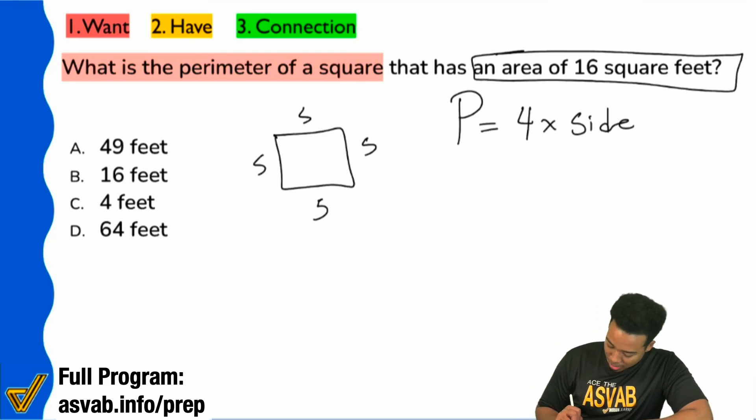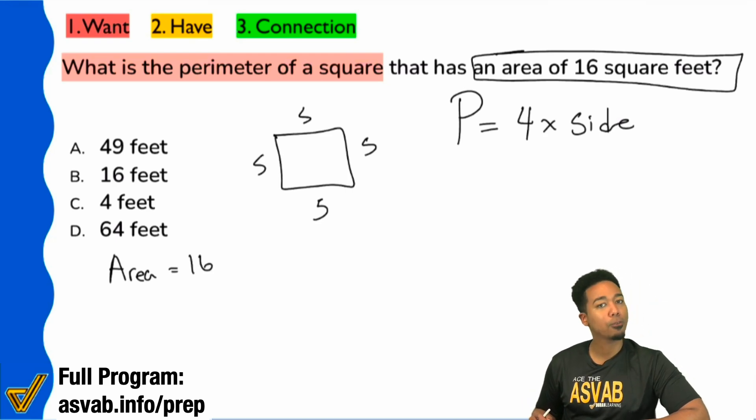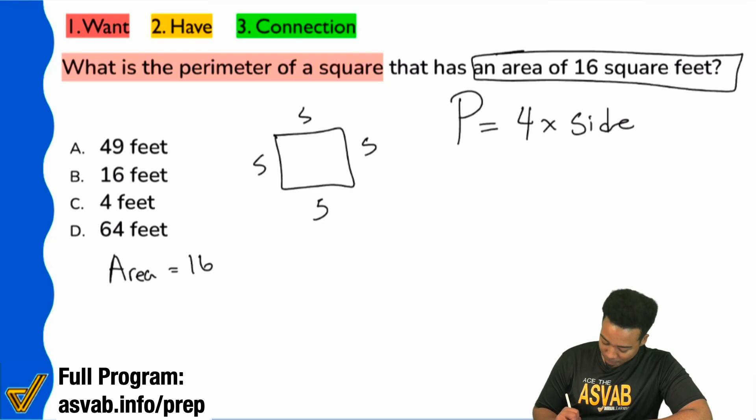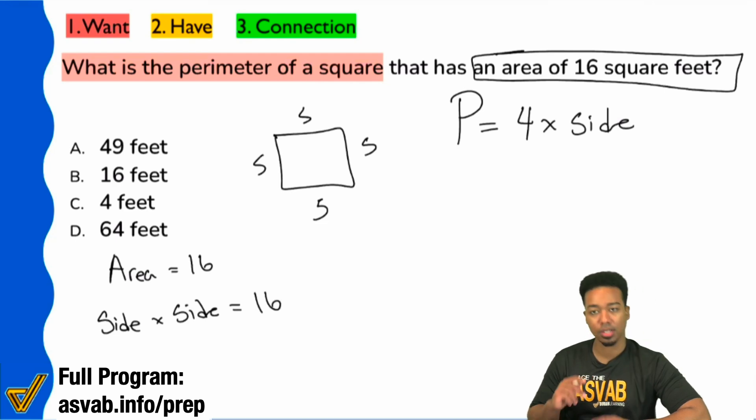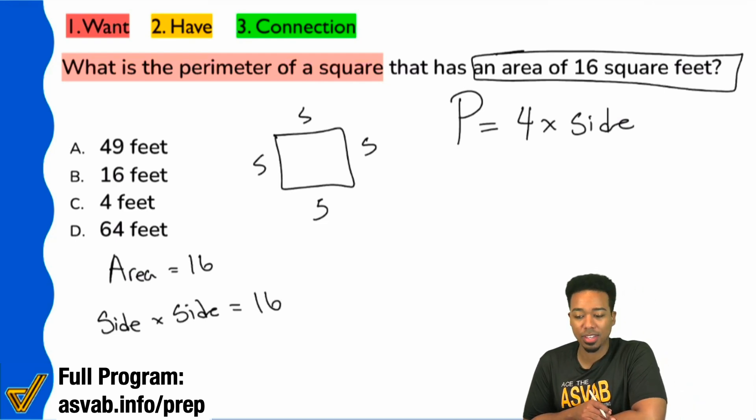So, when we go ahead and say, hey, the area equals 16. Well, remember, everybody, the formula for the area of a square was the side times the side. So, everybody, what times itself gives you 16? What times itself gives you 16? This is why we have to really pay attention.